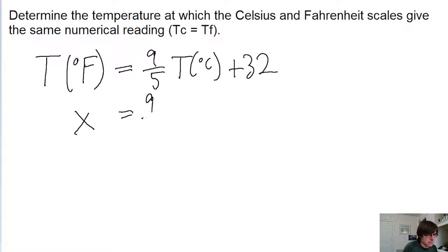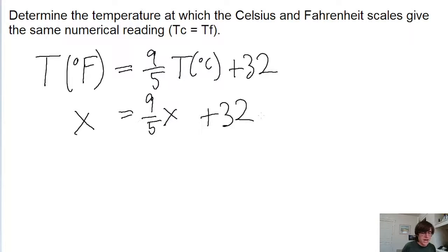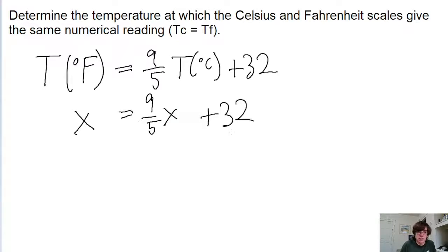So x is equal to 9 fifths times x plus 32. To solve for x, let's get both terms containing x on the same side of the equation and get the 32 on the other side by subtracting. We're just solving this using standard algebra. I'm going to subtract 32 from both sides of the equation and subtract x from both sides of the equation.